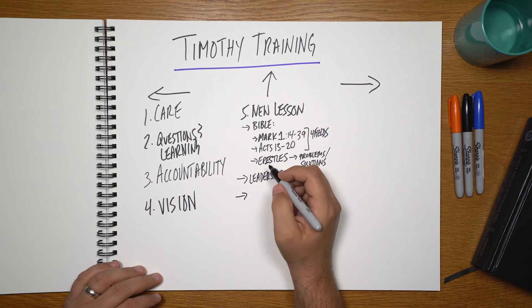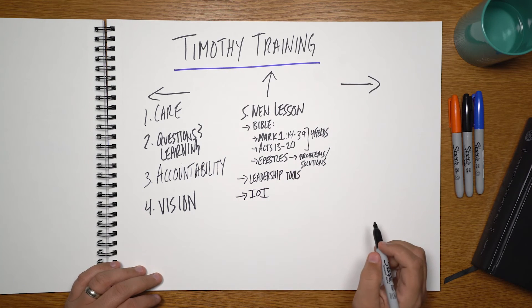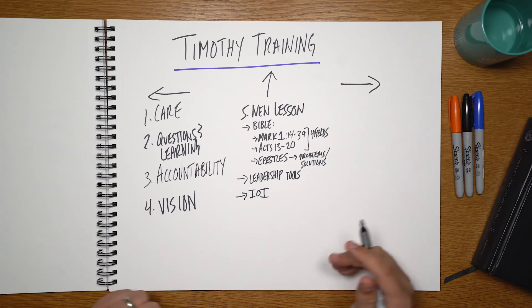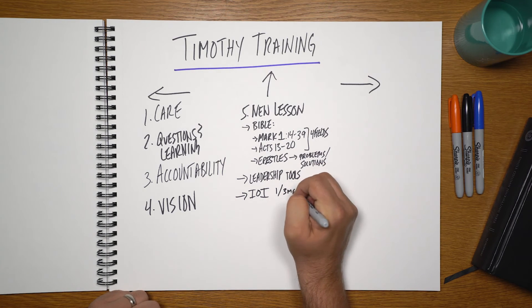And it's also a good time to do what we call Iron on Iron, which is a problem-solving group coaching tool. And we do this about once every three months, about once a quarter.